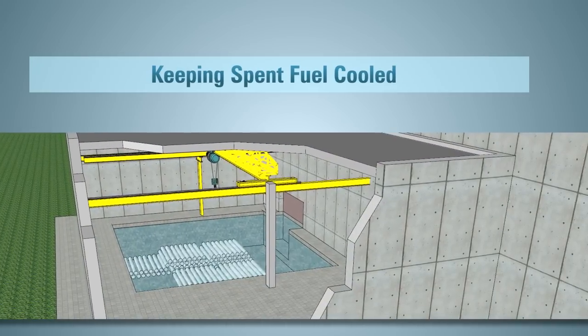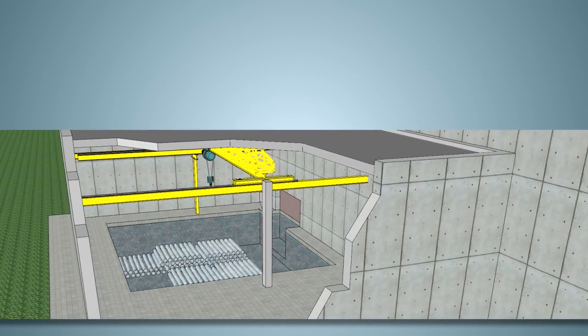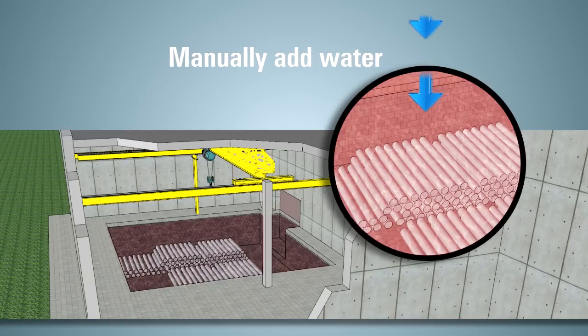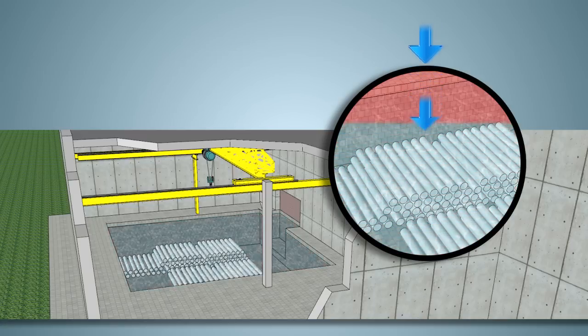In a total station blackout, the large amount of water in the spent fuel pools would slowly heat up. Workers would manually add water as necessary to keep the spent fuel covered by water and cooled.